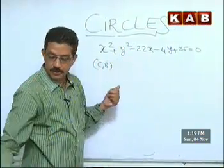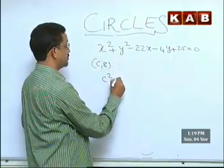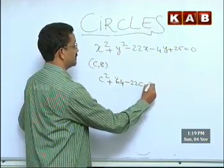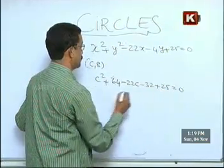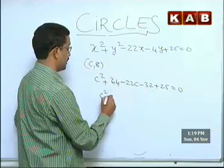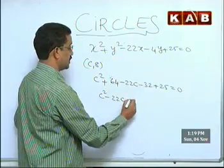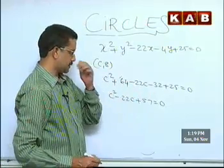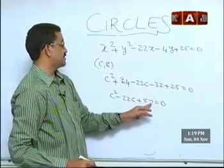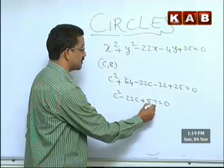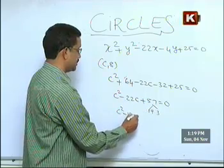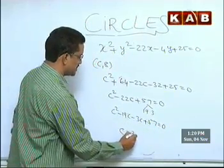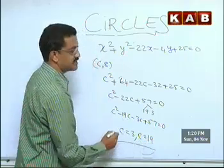Let me put (C,8) in the circle equation. C² + 64 - 22C - 32 + 25 = 0. That gives us C² - 22C + 57 = 0 (since 64 - 32 + 25 = 57). The factors of 57 are 19 and 3, which are suitable here. So (C - 19)(C - 3) = 0, giving C = 3 or C = 19. An important model this is.